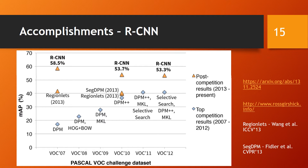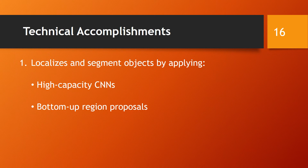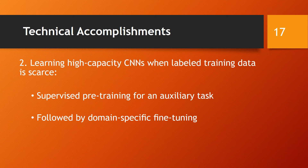It improves mean average precision by achieving a value of 53.3%, which is better than the previous best results on the Pascal VOC 2012. There are two technical accomplishments of the paper. The first is that it is able to perform object localization by applying high-capacity CNNs to bottom-up region proposals. The second is that it learns high-capacity CNNs for dealing with insufficient label data, achieved via supervised pre-training for an auxiliary task prior to domain-specific fine-tuning.